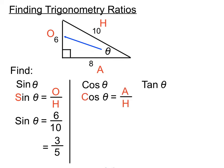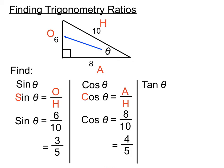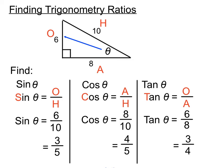For cos Theta, from "can't always hide", cos Theta equals adjacent over hypotenuse. The adjacent is 8 and the hypotenuse is 10, so cos Theta equals 8 over 10, which simplifies to 4 over 5. You can always type those fractions into a calculator to help simplify. For tan Theta, from "their old age", tan Theta equals opposite over adjacent: 6 over 8, which simplifies to 3 over 4.